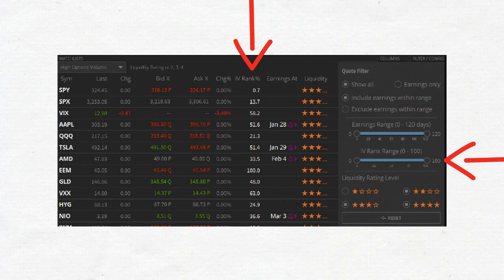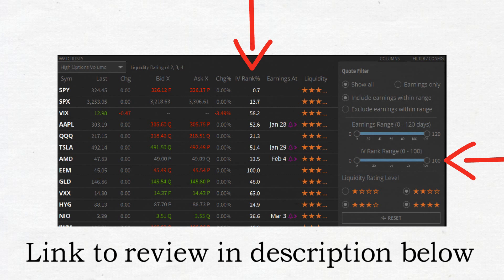If you currently do not have a broker platform that supports IV rank or other features related to implied volatility, I personally highly recommend Tastyworks. They are my favorite broker and you can check out my full review of Tastyworks in the description below.